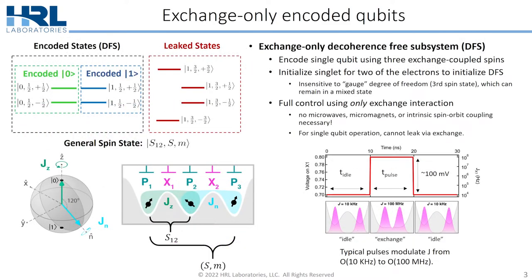So the exchange-only qubit — it's a way to do an encoded single qubit using three exchange-coupled spins. The way we enter what we call the decoherence-free subsystem is by initializing two of those spins in a singlet state, leaving the third spin as a gauge degree of freedom that we don't need to initialize.